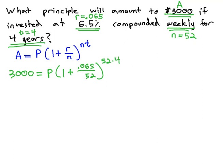And then we'll solve what's left for the remaining variable of P, or what principle we need to invest. I always say to take a moment to evaluate the parentheses and the exponent in separate steps on my calculator, so I don't get in trouble.